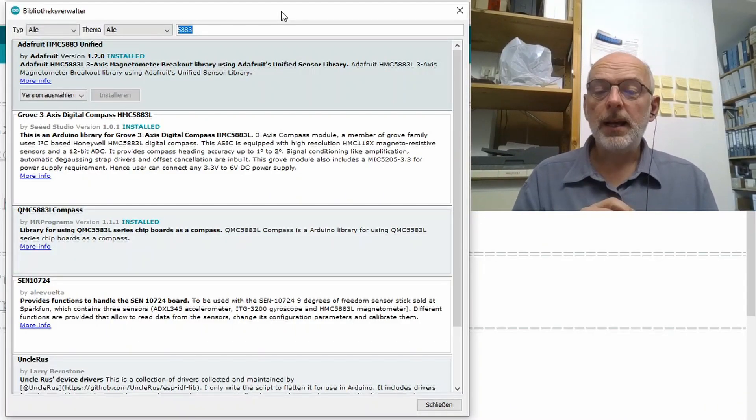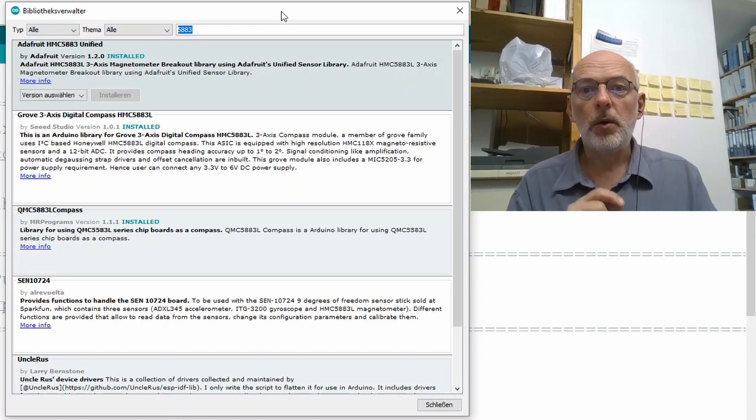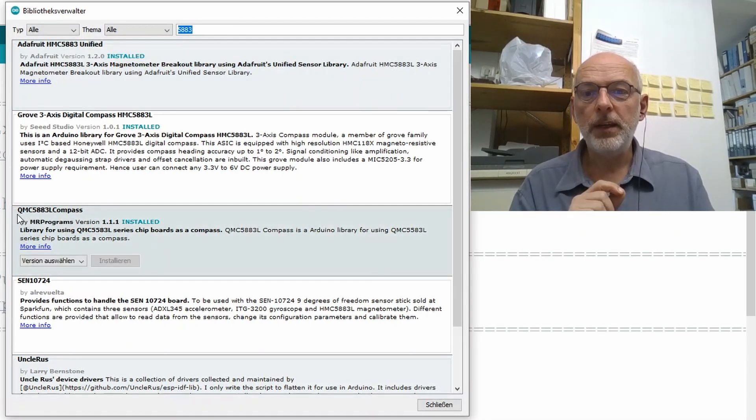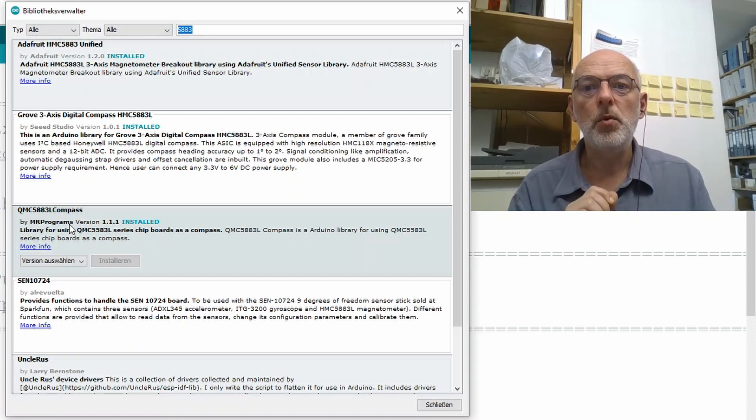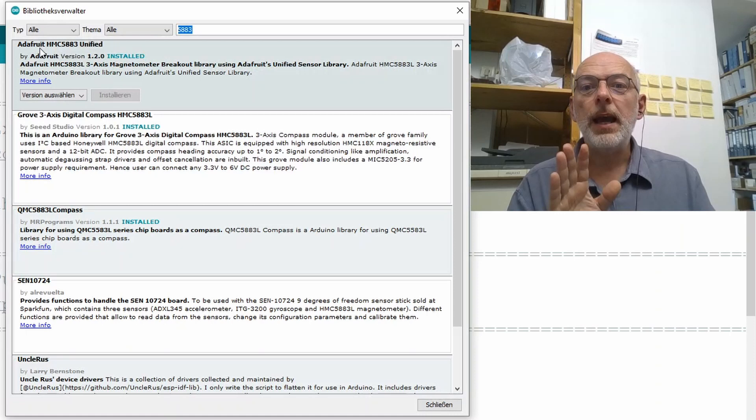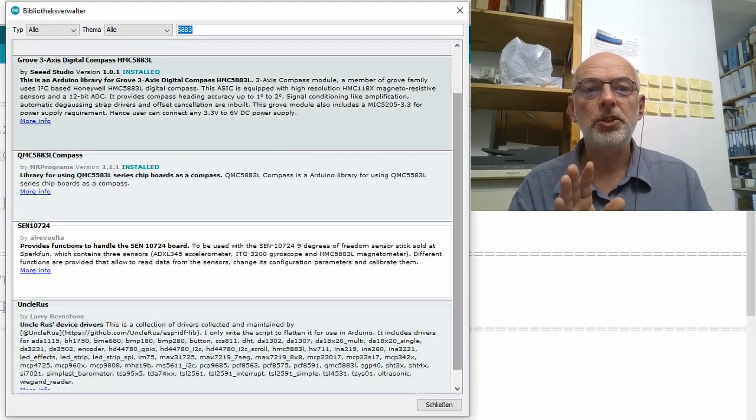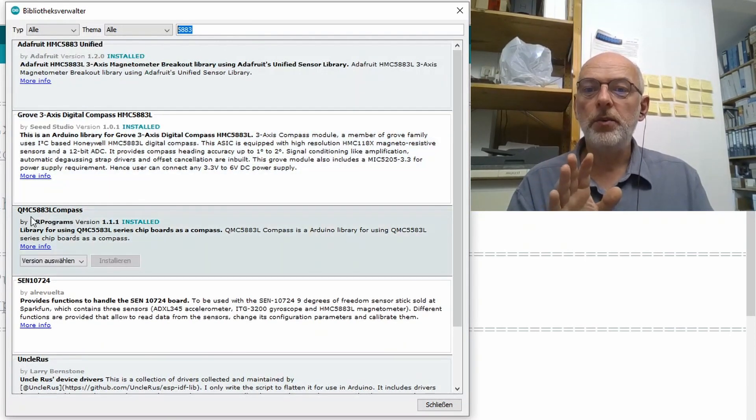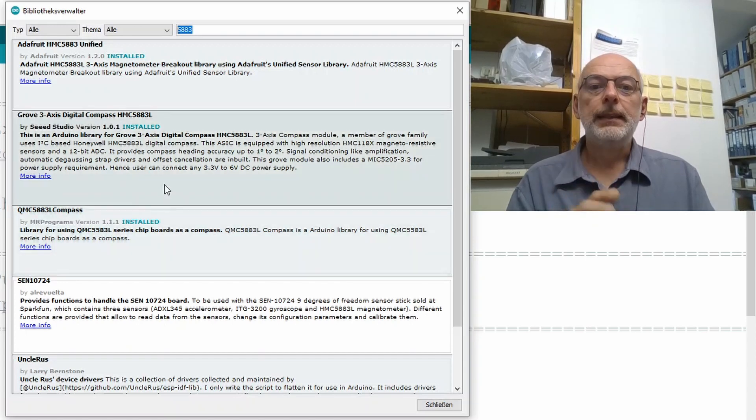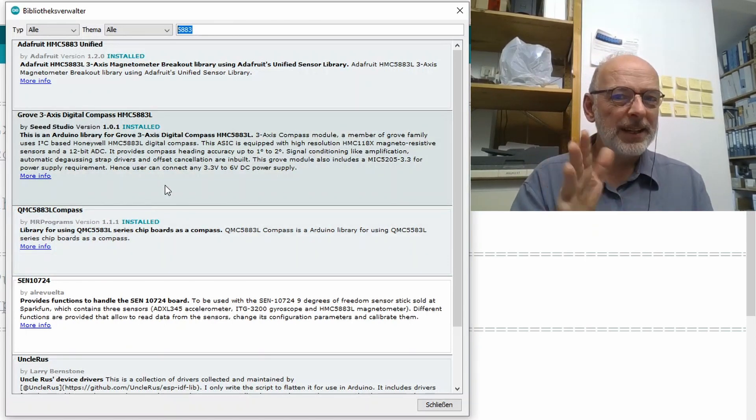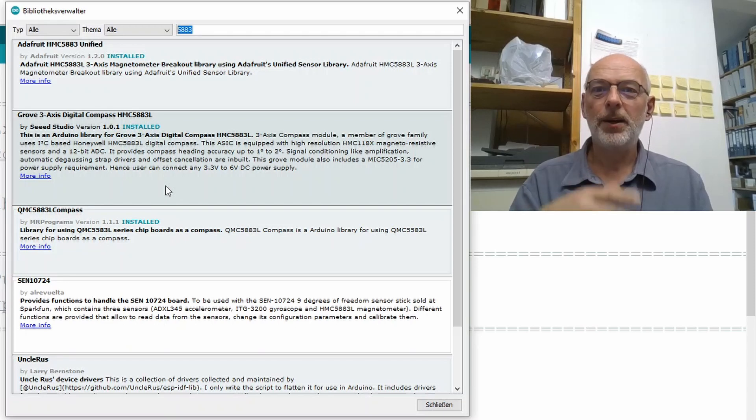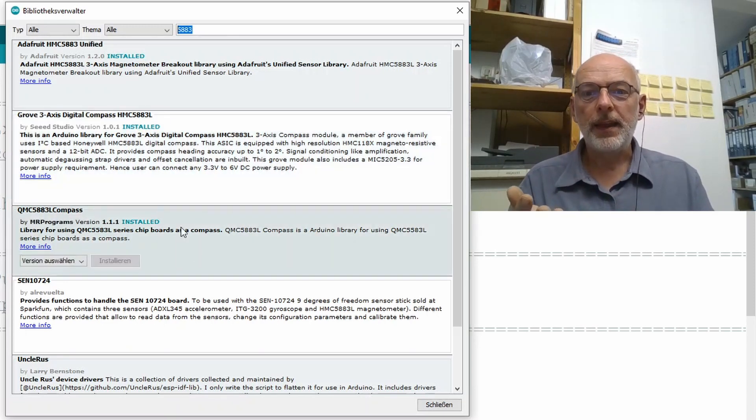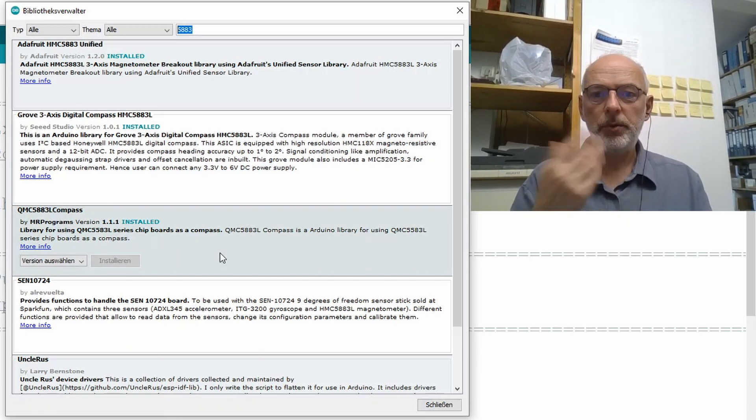Fortunately, there's already a library available for the Arduino. Simply go into the Library Manager and search for 5883 and you find the QMC 5883L Compass Library from MR Programs. Please note, the HMC 5883 libraries you find here won't work with the QMC 5883L. The reason being slight differences in the register setup of the two chips. But that one works perfectly and I'll show you some examples.